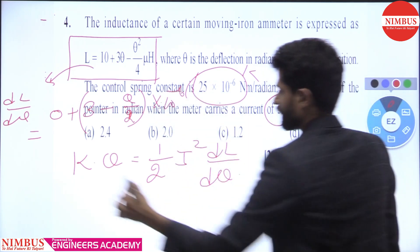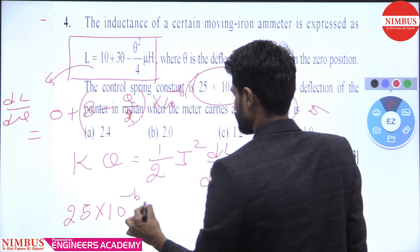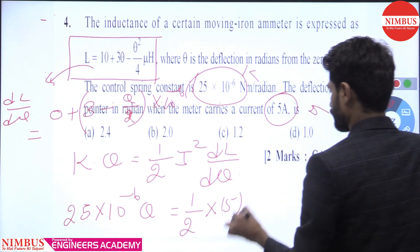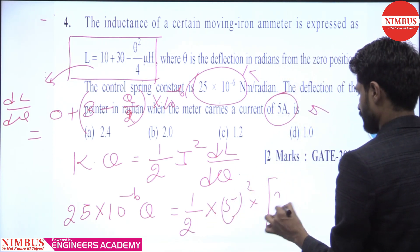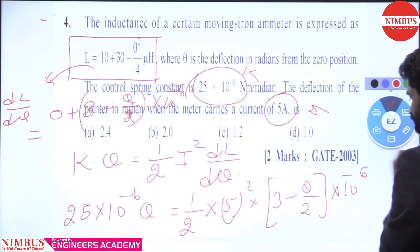So if we have values here, K value is 25 into 10 to the power minus 6 theta equals 1 by 2 into 5 squared into 3 minus theta by 2 into 10 to the power minus 6.